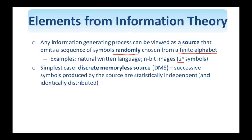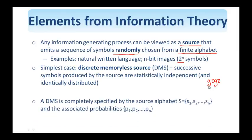So, for example, in English, I don't believe one can have this combination of four letters. Now, this DMS source is completely specified by the source alphabet and the associated probabilities for each symbol in the alphabet.